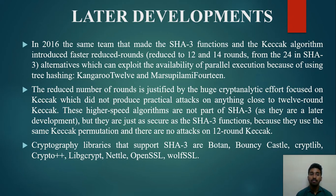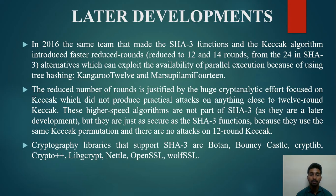In 2016, the same team that developed SHA-3 and the KECCAK algorithm introduced faster reduced-round variants — reduced to 12 and 14 rounds from the 24 in SHA-3 — which can exploit parallel execution through tree hashing: Kangaroo-12 and Marsupilami-14. The reduced number of rounds is justified by the extensive cryptanalytic effort focused on KECCAK, which produced no practical attacks on anything close to 12-round KECCAK. These higher-speed algorithms are not part of SHA-3 but are just as secure, since they use the same KECCAK computation.